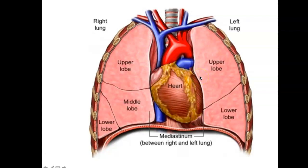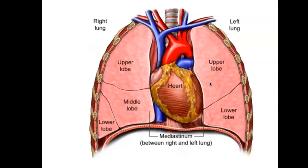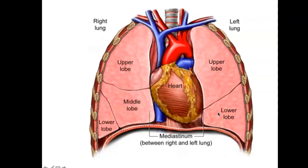Relative to the lungs, we have the right lung with its superior — we call it the superior instead of the upper — the superior, the middle, and the inferior, or the upper, middle, and lower lobes. Then on the left, as you see, there are only two of them: the superior and inferior lobe, or upper and lower lobes. That's because the heart is sort of protruding into this side, so there are fewer lobes on the left side.